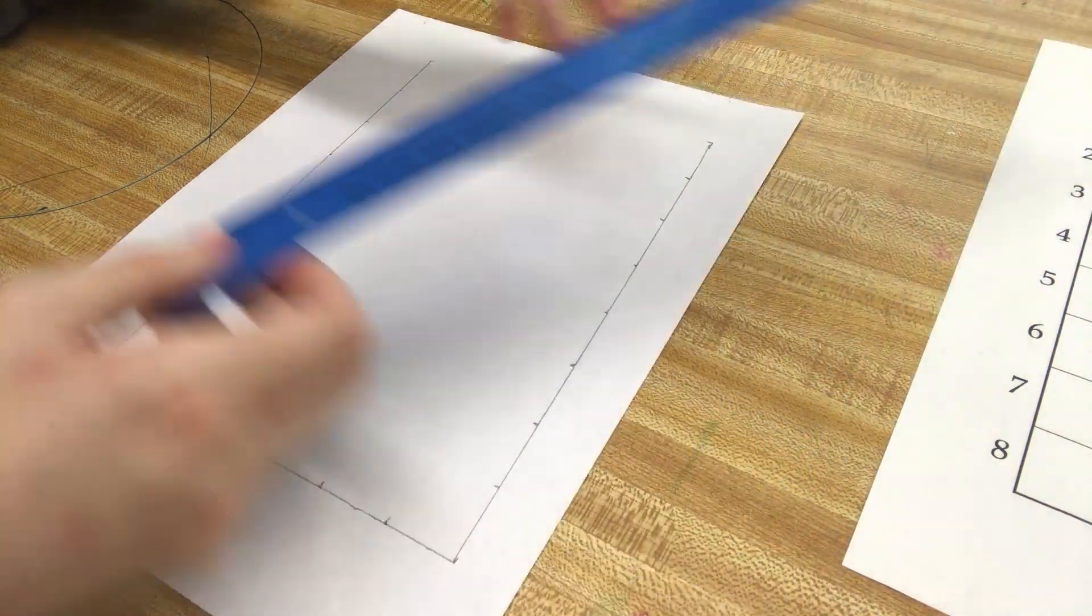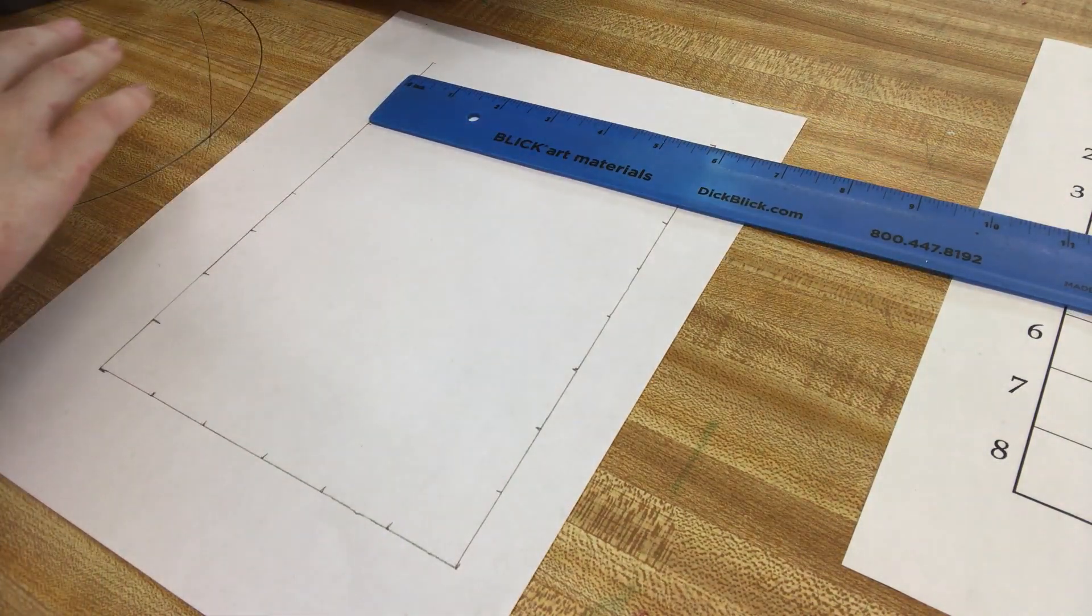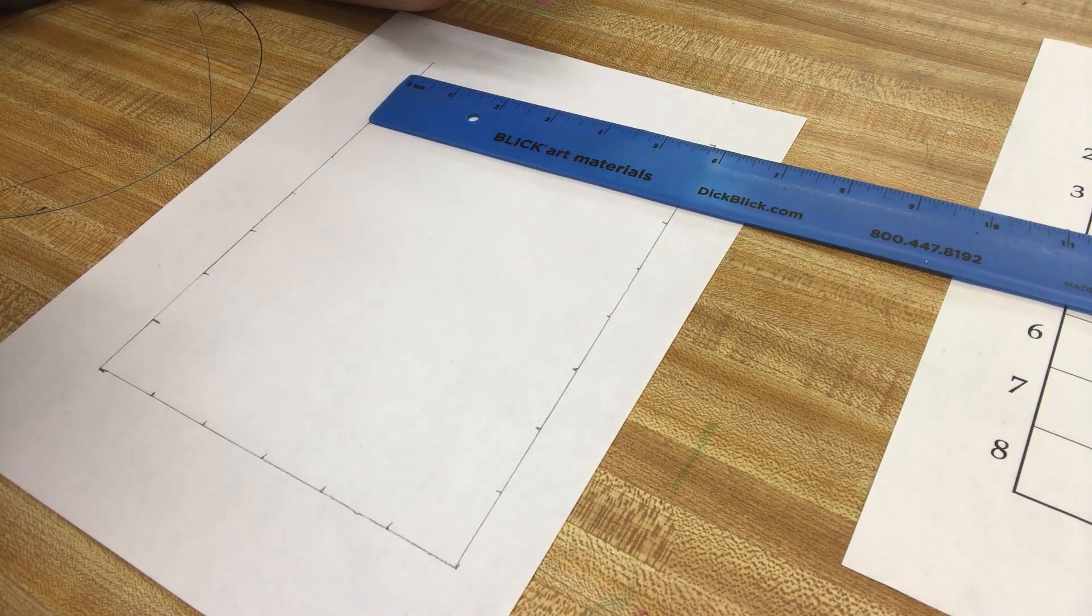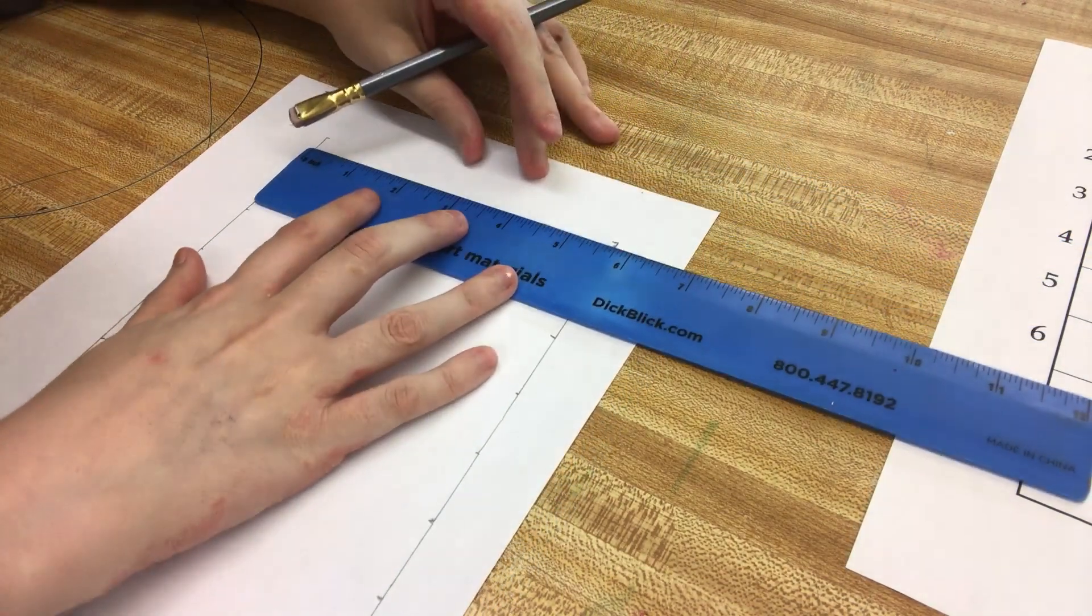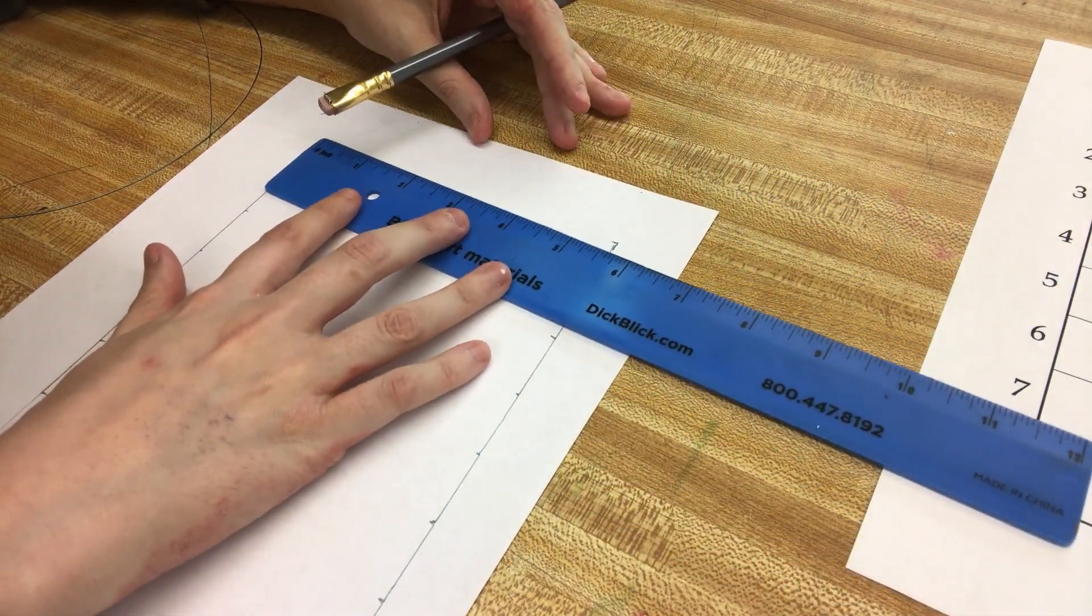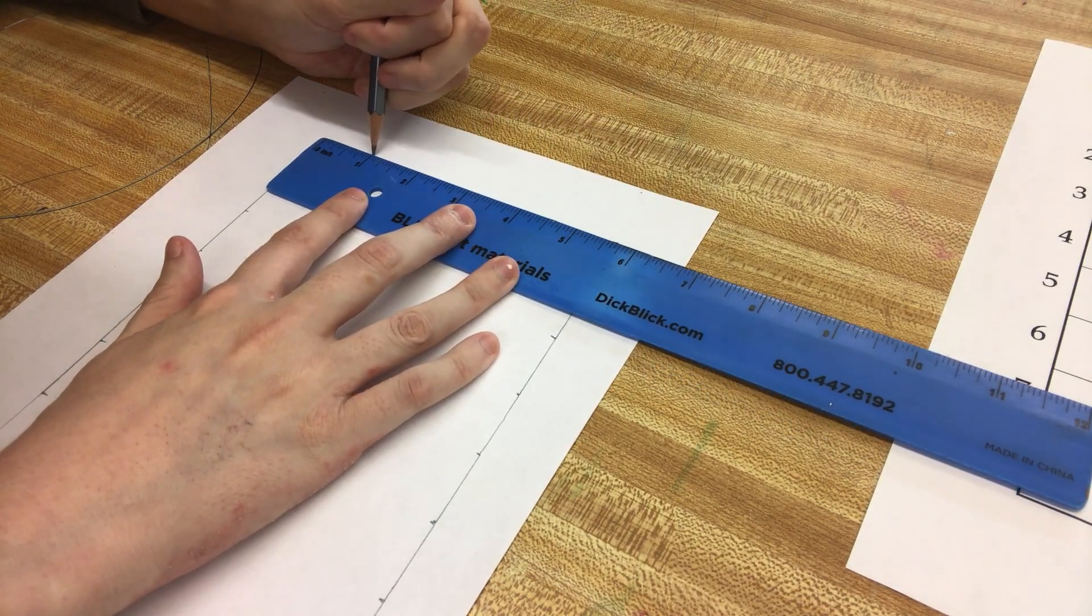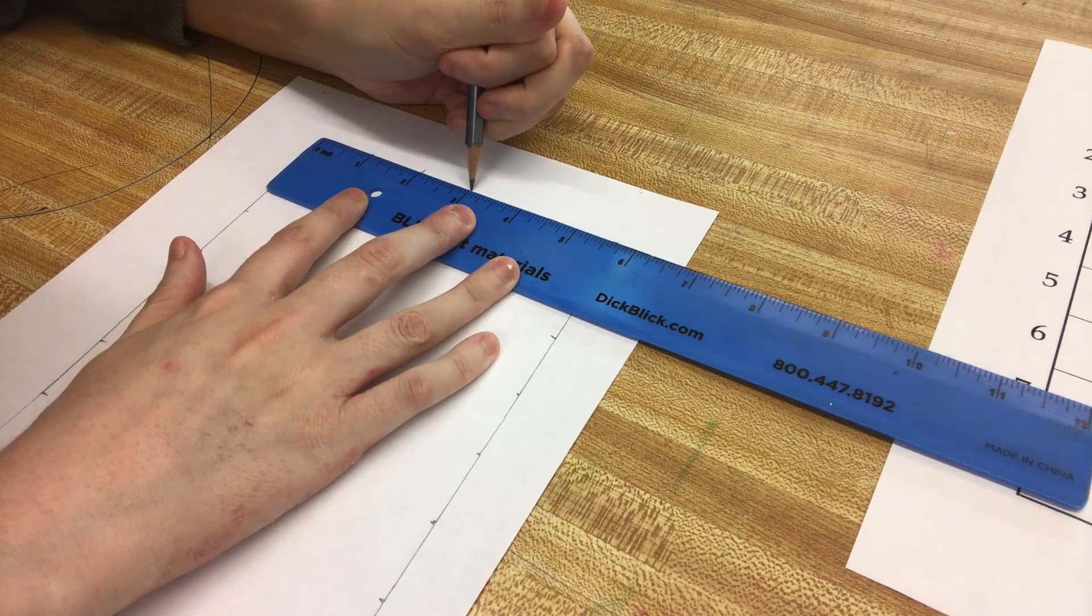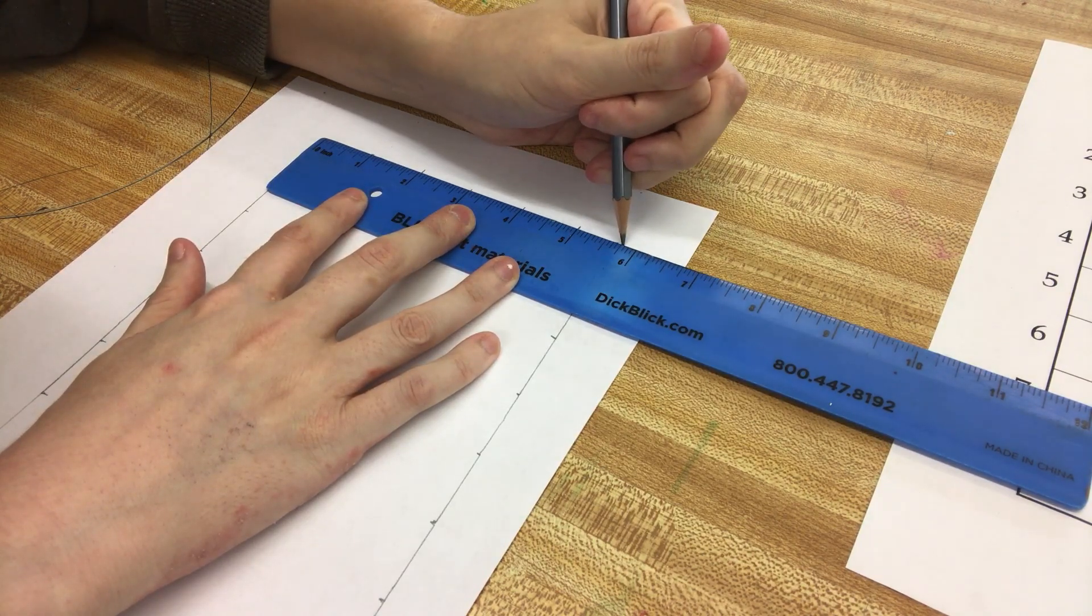Now I'm going to also do dots at the top. It's important to do the dots at the top too because it's going to make it easier for us to connect. So I'm going to put my ruler at the top and put a dot at the 1, 2, 3, 4, 5, and 6.